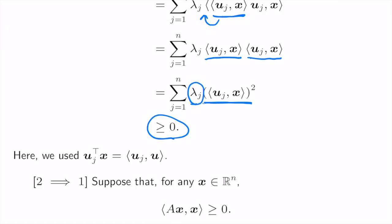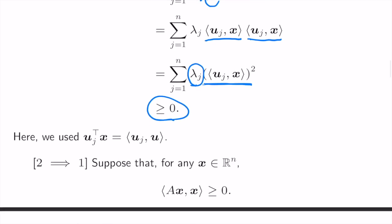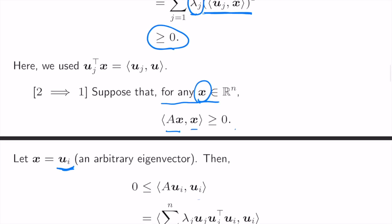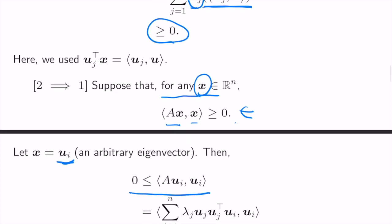Next, let's prove the converse. Suppose condition 2 is true — that for any vector x, the inner product of Ax and x is greater than or equal to zero. Since x can be any vector, we can pick one of the eigenvectors uᵢ. According to this inequality, we have the corresponding result.